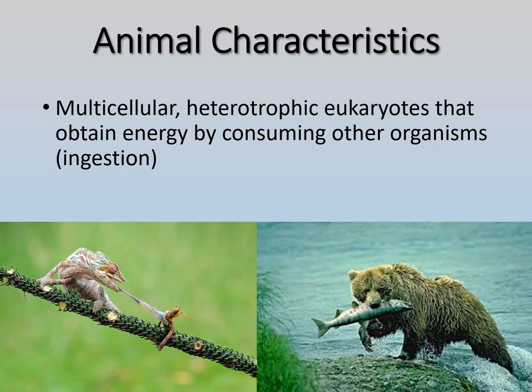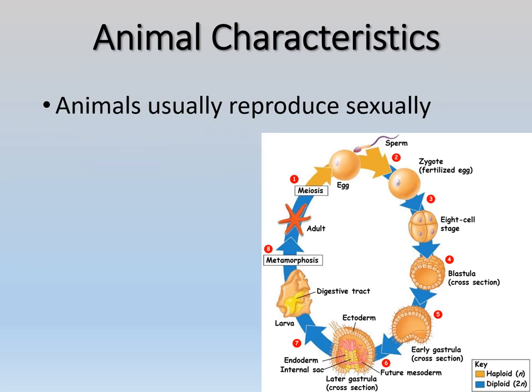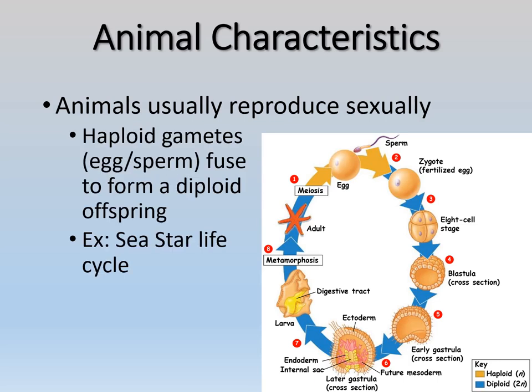Animals have to consume some other organism to obtain their energy, though what they consume varies. Most animals reproduce sexually — that's another common characteristic. Some can reproduce asexually or do both, but sexual reproduction is most common. In sexual reproduction, two haploid gametes — each with half the genetic material, the egg and sperm — fuse to form a diploid offspring, which divides and becomes a new organism.